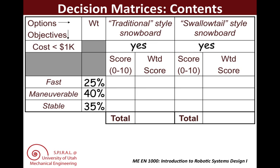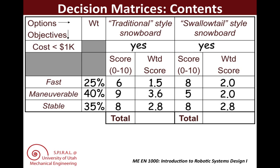Next, we assign weights to the objectives. In our PCC, we found maneuverable to be the most important, but since we feel that all three objectives are fairly similar, we assign it 40%, followed by 35% for stable as the second most important objective, and the remaining 25% goes to fast. Next, we assign scores. If we look at fast, we might say the traditional board gets about 6 out of 10 for being fast under most conditions, with 8 out of 10 for the swallowtail. For maneuverability, the traditional style gets a 9 out of 10, with 5 out of 10 for the longer swallowtail. For stability, perhaps we decide they are both about an 8, since they are both reasonably stable under the different conditions they are designed for. We calculate the weighted score by multiplying 6 times 0.25 to get 1.5, and so on. Adding up the scores, we can see that our total score is slightly higher for our traditional style with 7.9, as compared to the swallowtail with 6.8.